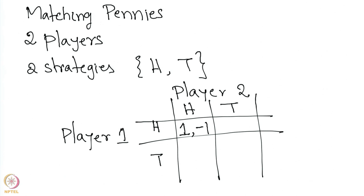If both choices are the same, player 1 gets a unit — that is the meaning of this 1, -1. Similarly, when both players choose T and T, it is the same thing: player 1 gets 1 unit, player 2 has to pay 1 unit to player 1. If their choices are different, like player 1 chooses T and player 2 chooses H, player 1 has to pay 1 unit to player 2. Similarly, if player 1 chooses H and player 2 chooses T, player 1 has to pay 1 unit to player 2. This is a simple example of a two-player zero-sum game.